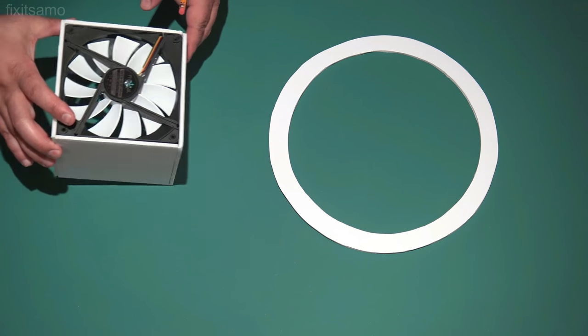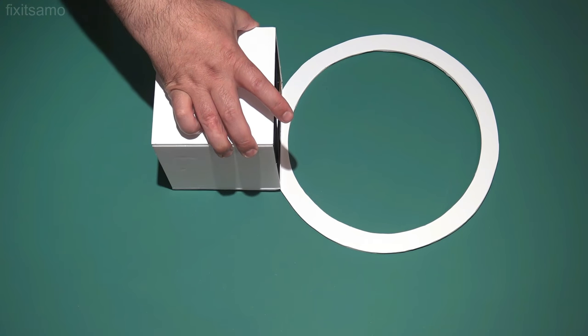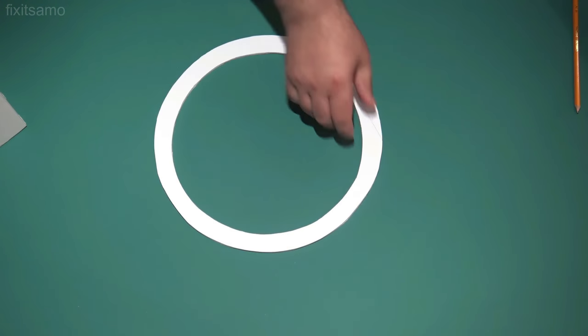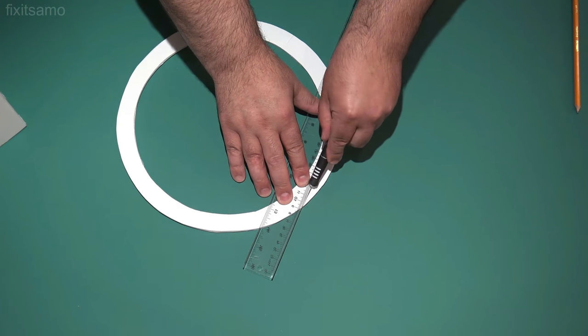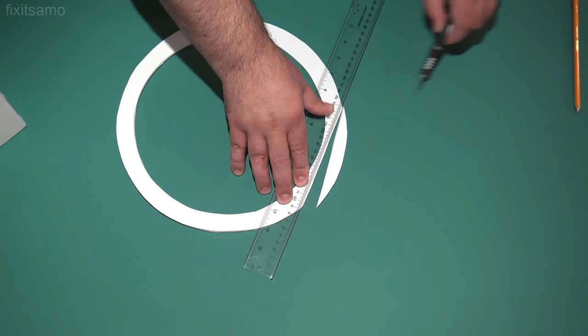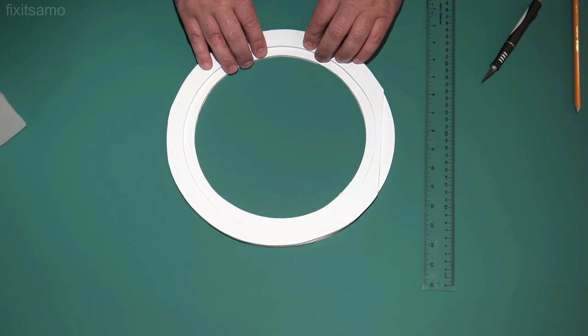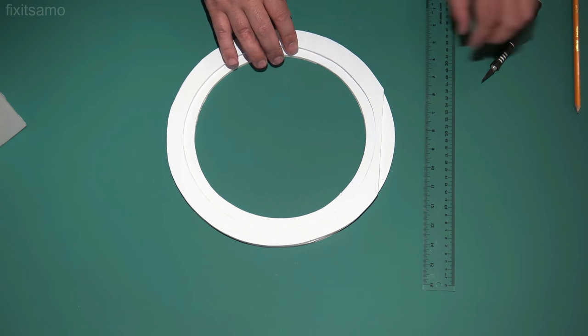Okay so now the next step is to align the circle on the box. And we're going to do the same thing for the second circle.